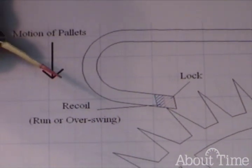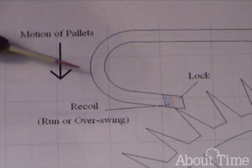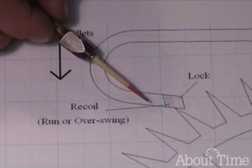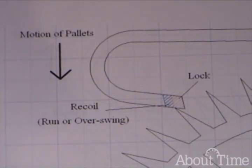And now here, motion of the pallets, again, we've got lock, recoil, and this is evident as run or overswing of the pendulum.